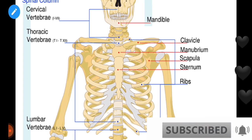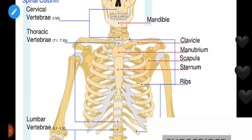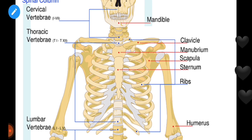The human skeleton is a total of 206 bones.